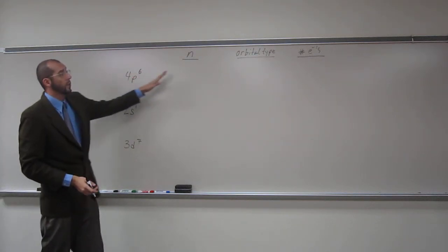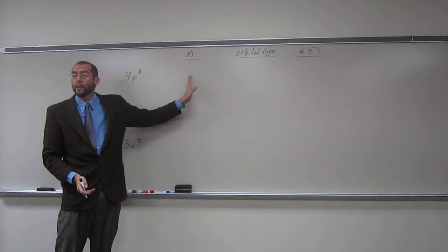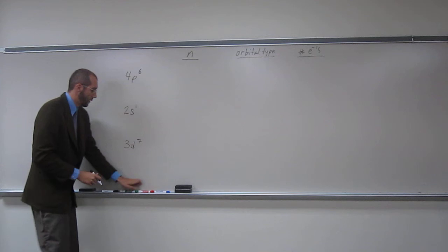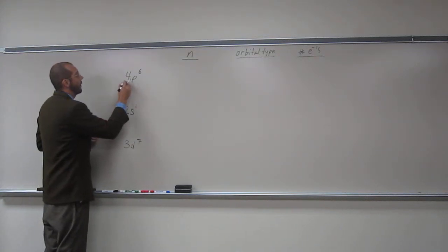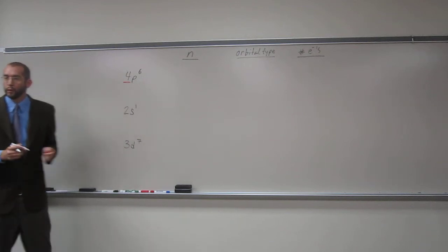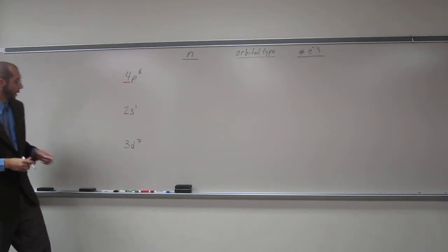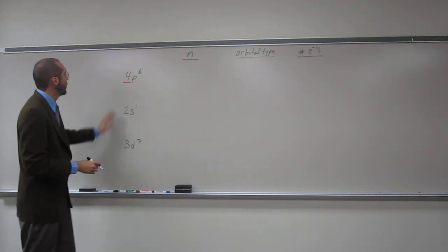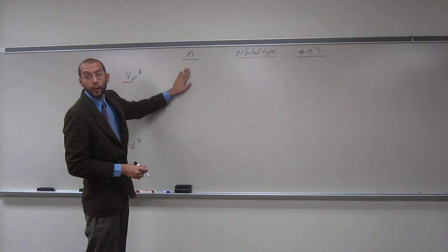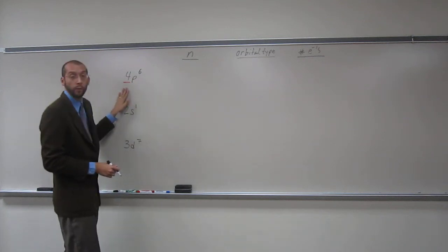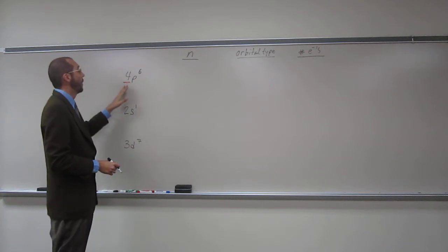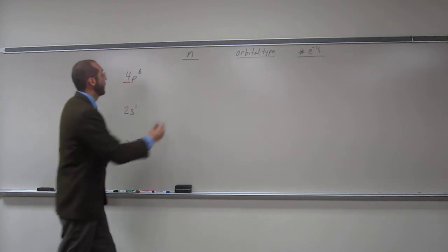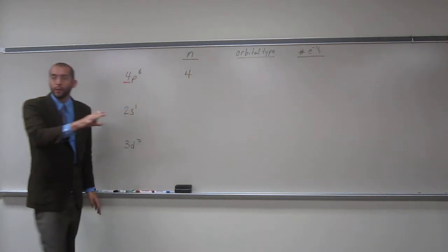So remember, principal energy level is N, right? So that's like the first quantum number and that's represented by this number that's in front of that orbital description. So hopefully you guys, if you would like to help me, if you don't want to, that's totally cool. So N or the principal quantum number in this 4P6, if we're looking at one of the electrons in this 4P6 portion, it would be four, right? So is everybody fine with that?